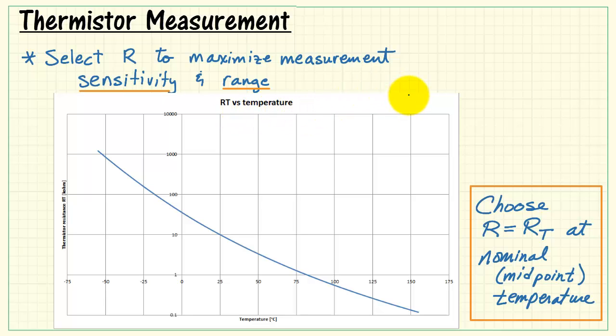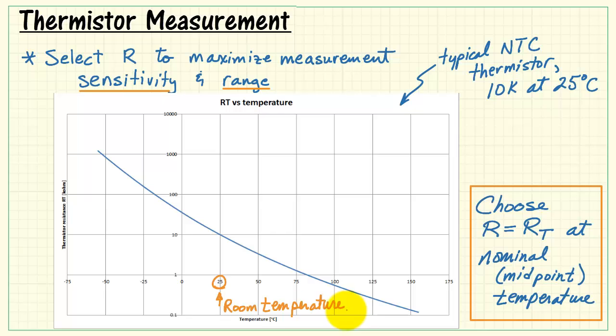Now let's take a look at how the thermistor resistance varies as a function of temperature. We'd like to see how this impacts our voltage divider equation. Here's a typical negative temperature coefficient thermistor which has 10k ohms at 25 degrees C. Let's try applying this rule at several different nominal temperatures. If we have an application where we're generally working in room temperature,